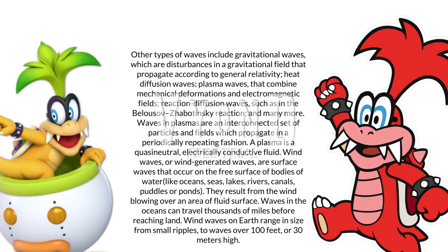Wind waves, or wind-generated waves, are surface waves that occur on the free surface of bodies of water like oceans, seas, lakes, rivers, canals, puddles or ponds. They result from the wind blowing over an area of fluid surface. Waves in the oceans can travel thousands of miles before reaching land. Wind waves on Earth range in size from small ripples to waves over 100 feet, or 30 meters high.